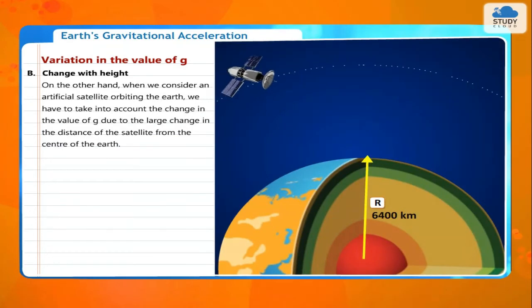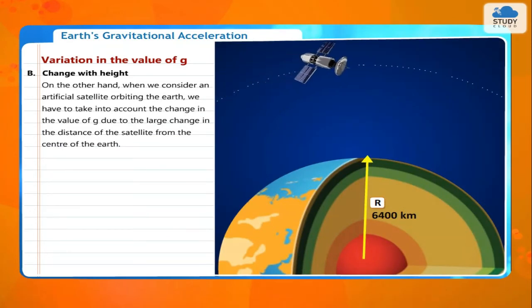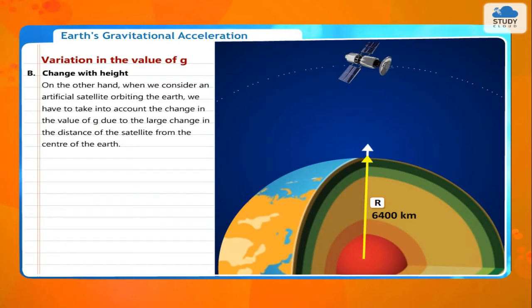On the other hand, when we consider an artificial satellite orbiting the Earth, we have to take into account the change in the value of g due to the large change in the distance of the satellite from the center of the Earth.